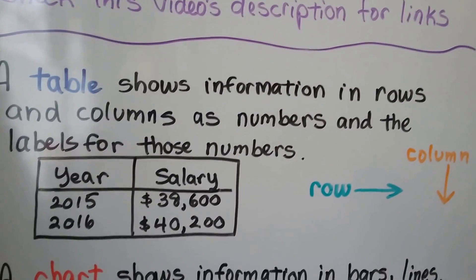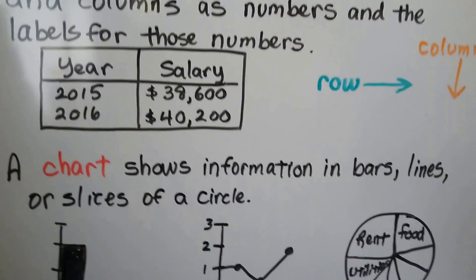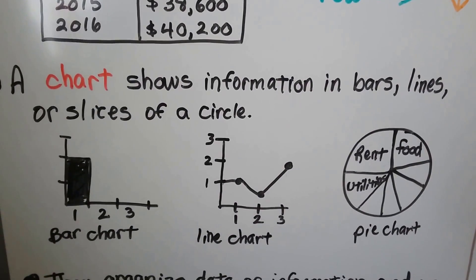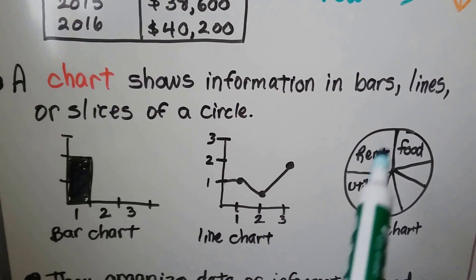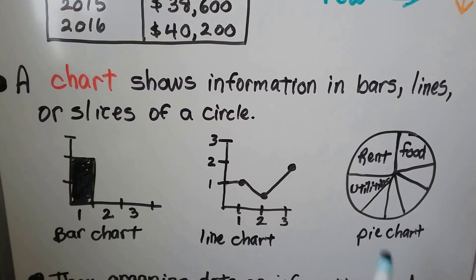Rows go across, columns go up and down. A chart shows information in bars, lines, or slices of a circle, like this pie chart shows slices of a circle. Looks like a pie, doesn't it?